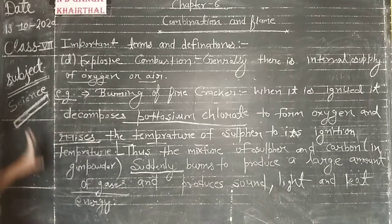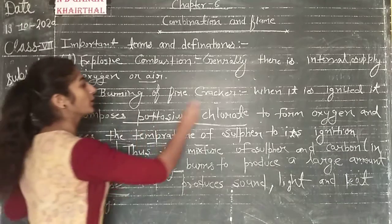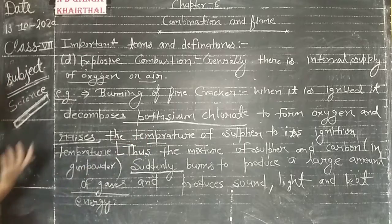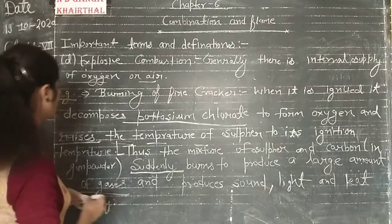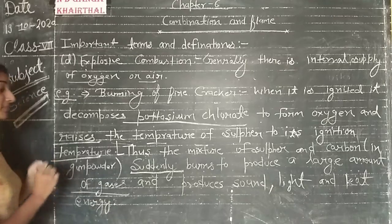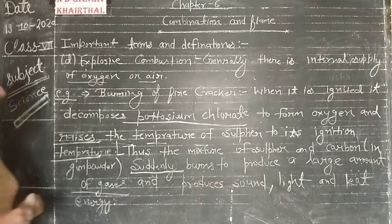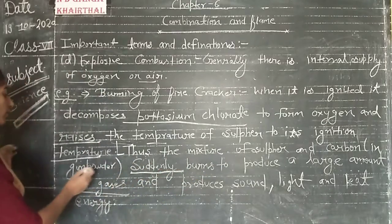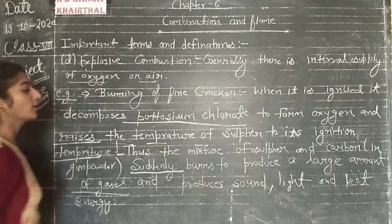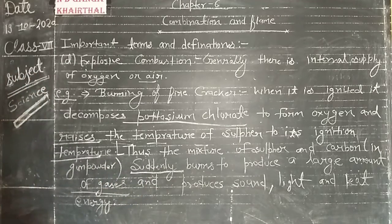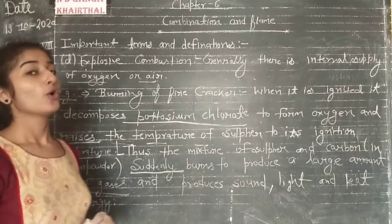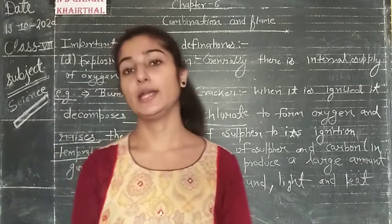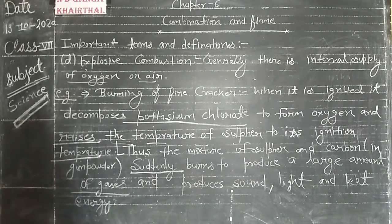This is how explosive combustion takes place. First, the fire cracker decomposes potassium chlorate to form oxygen and rises the temperature of sulfur to its ignition temperature. Then the mixture of sulfur and carbon suddenly burns. We produce gas, sound, energy. So this is explosive combustion.